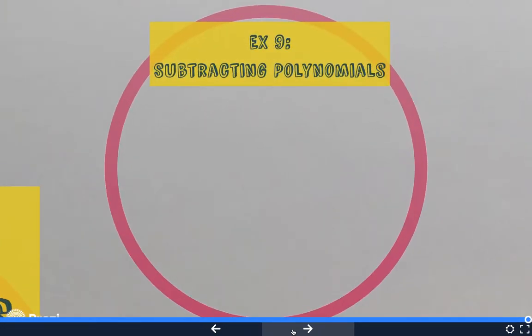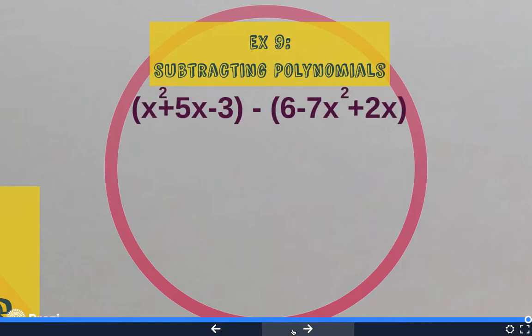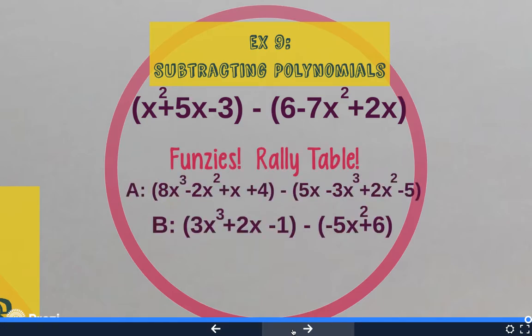Example nine is our final example problem — we're going to be subtracting two polynomials. If you think back to when we did function notation and subtracted, it's actually very similar. Watch example nine to see how similar this is to when we subtracted using function notation.